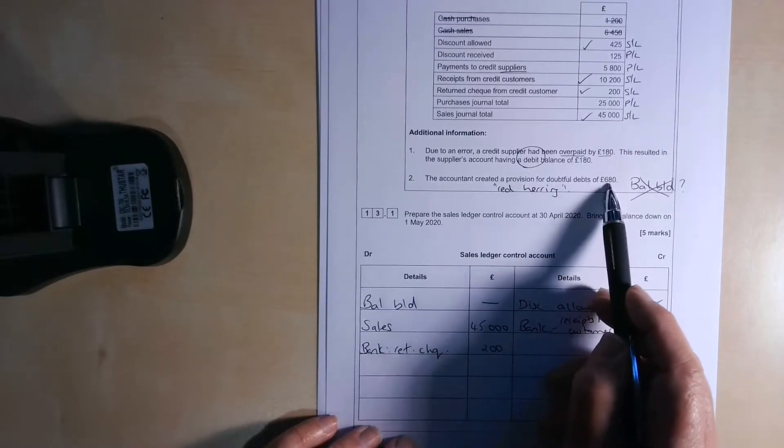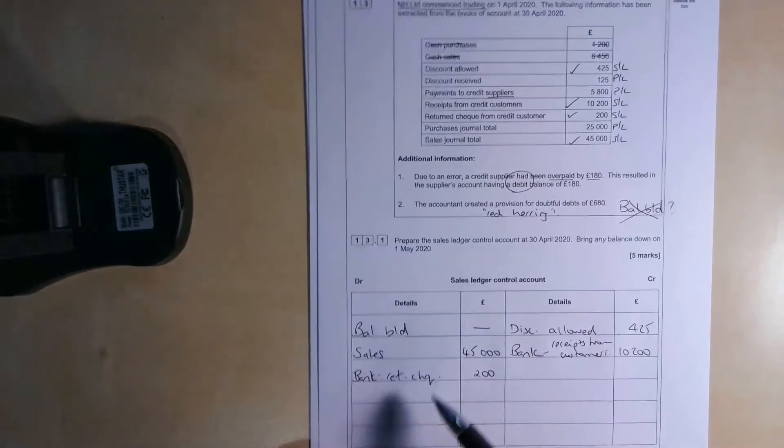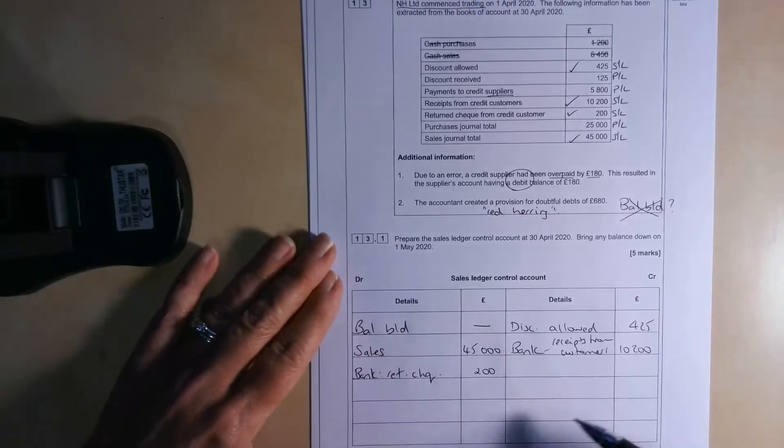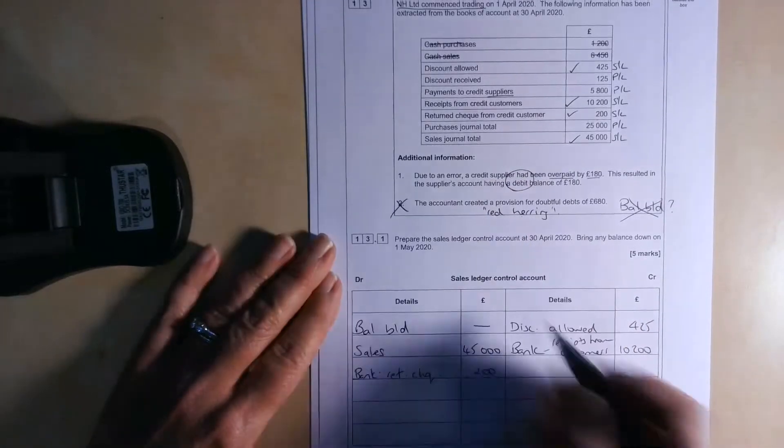So if you remember, the provision for doubtful debts is just deducted from trade receivables on the statement of financial position. It doesn't actually reduce the trade receivables per se. So it's just an allowance for the fact that some of them might go bad. So we don't want to be doing anything with that one.